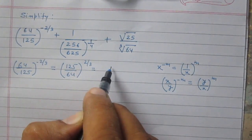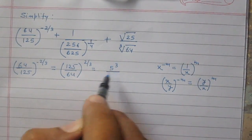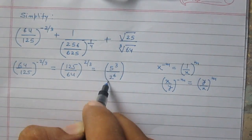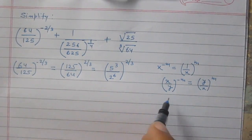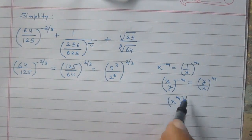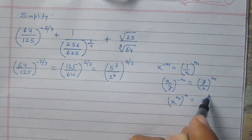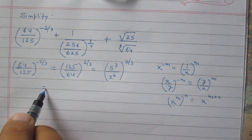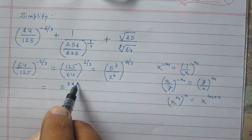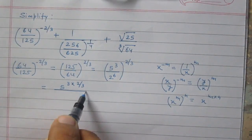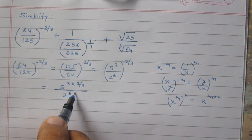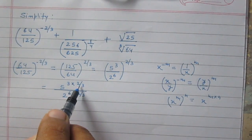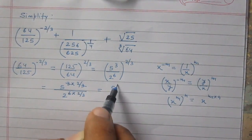Further, 125 is 5 raised to the power 3 and 64 is 2 raised to the power 6, then whole raised to the power 2 by 3. We know that x raised to the power m raised to the power n is equal to x raised to the power m multiplied by n. Using this rule, we can write it as 5 raised to the power 3 multiplied by 2 by 3, and 3 multiplied by 2 by 3 gives result 2, so it is 5 raised to the power 2.